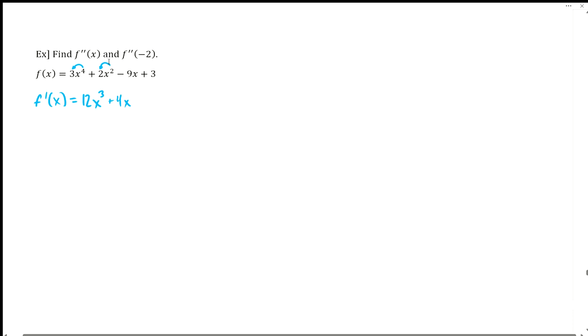The next term is linear, so that means just this coefficient is the leftover final answer for that derivative. And then the last term is constant. Derivative of a constant is 0. So that's our first derivative.